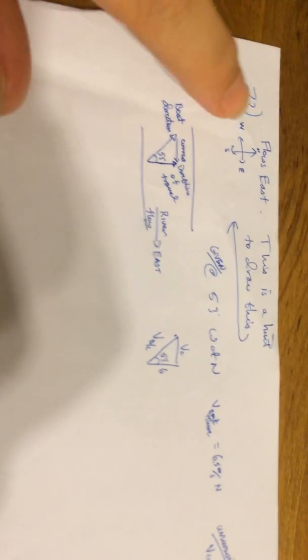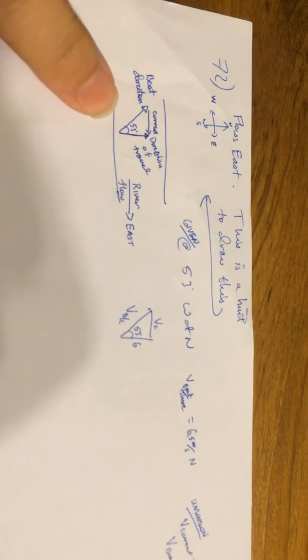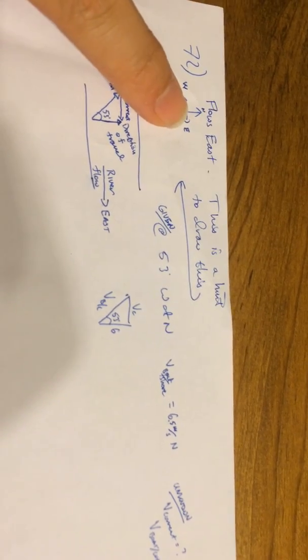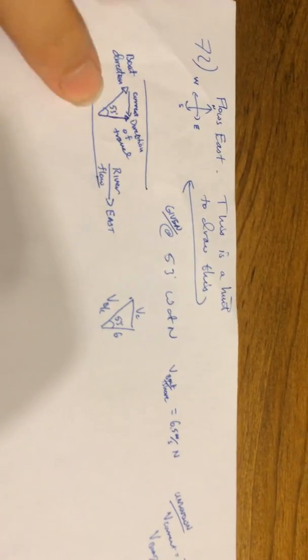Okay, for problem 72, here's some hints. Let's see. The fact that the river flows east is a hint that you need to draw a picture and use your cardinal directions.